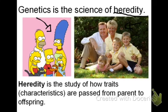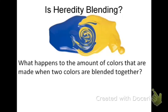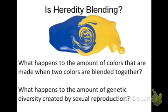Is heredity blending? What happens when we blend two things together? We take some blue paint and mix it with some yellow paint — we get something that's essentially green. So we get something completely new, completely novel. And in fact, we have a net loss of genetic variation: we start with two colors and end up with only one going on to the next generation. So heredity is not blending. The amount of genetic diversity created by a blending process is actually decreased, and you know that the amount of genetic variation from sexual reproduction actually increases. So heredity is not a blending process — it's going to be much more complicated than that.